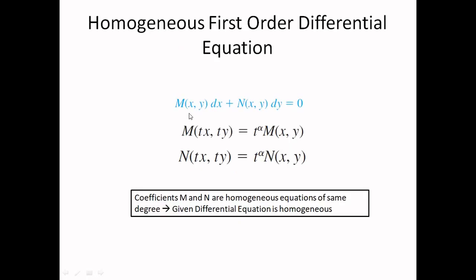In exact and non-exact differential equations, you came across equations where we have a function M and function N. We can find M(tx, ty) and N(tx, ty). If you find them equal to t^alpha · M(x, y) and t^alpha · N(x, y), and if the alpha in both coefficients M and N is the same, then we can call such a differential equation a homogeneous equation.